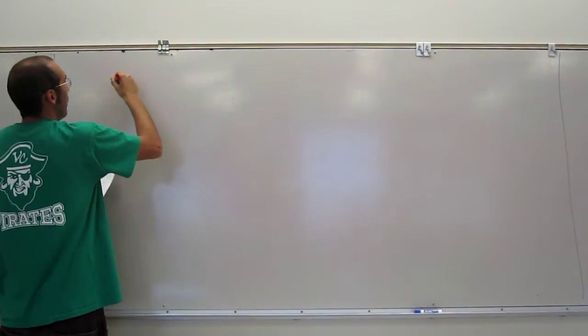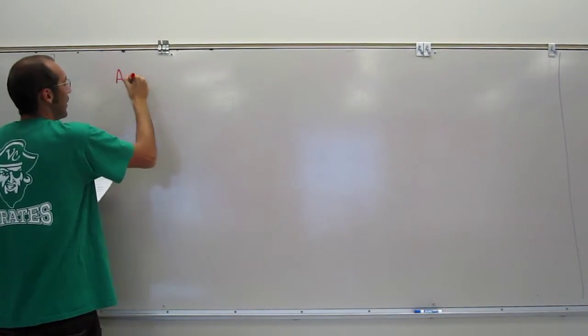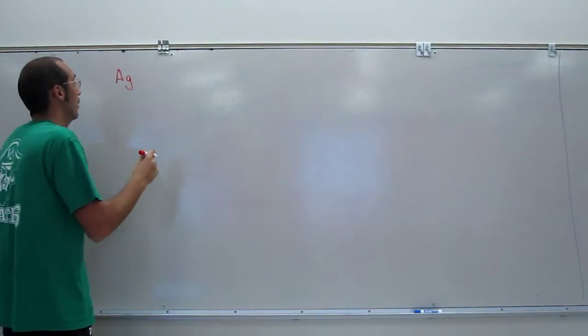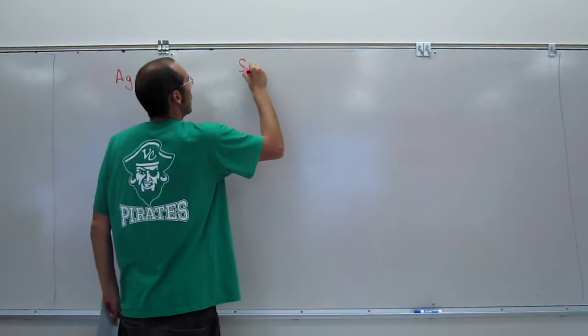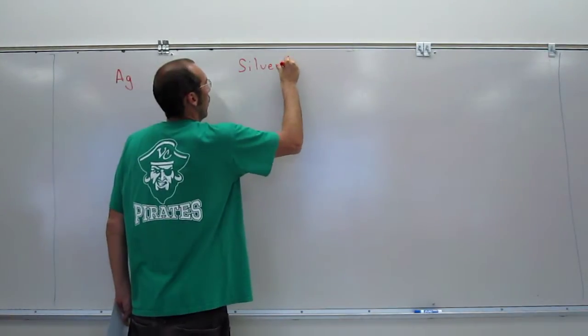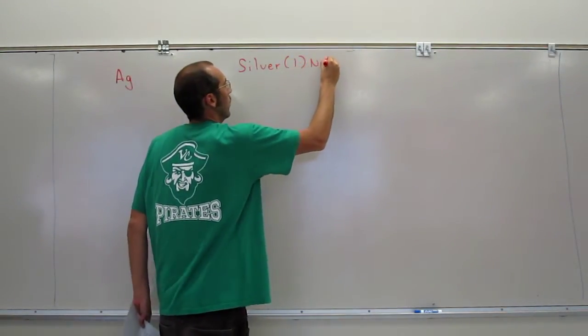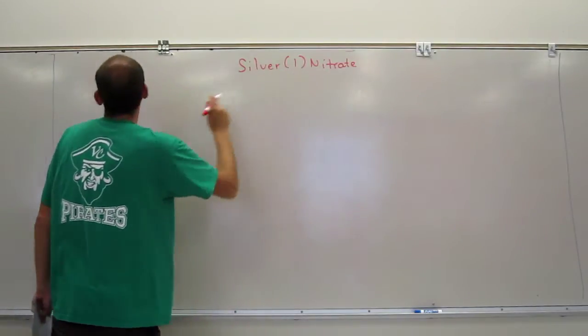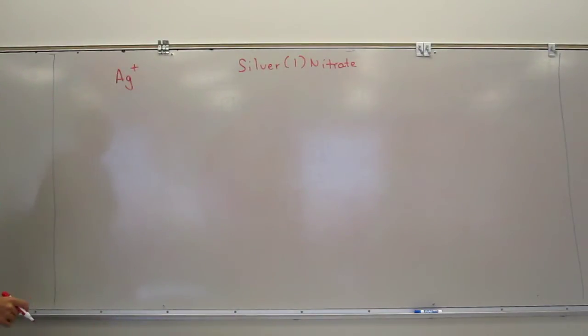So silver 1, that means, if you look on the periodic table, silver is Ag, right? And it's a transition metal, so it's written silver 1 nitrate. Silver 1 means Ag plus, like that.